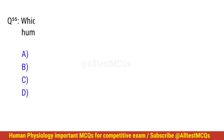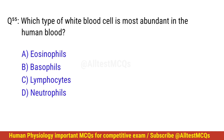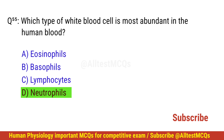Question number 56. Which type of white blood cell is most abundant in human blood? The correct option is D: Neutrophils.